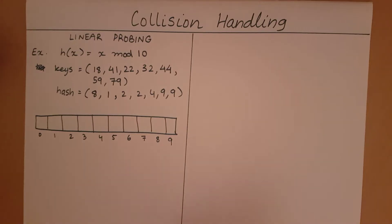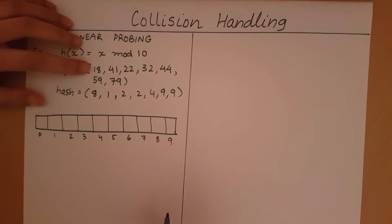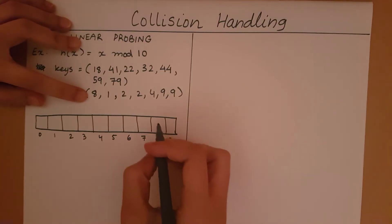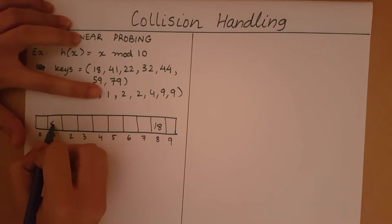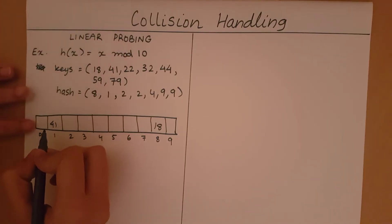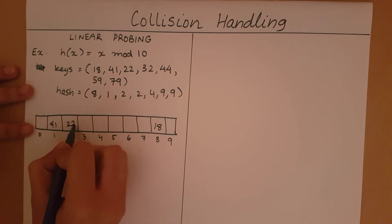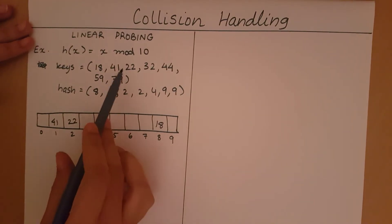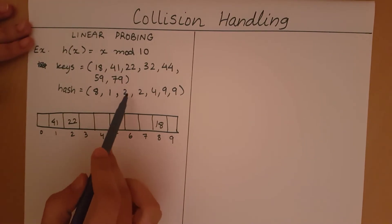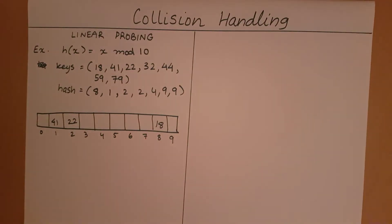Where do I place these keys? I place each key at the index equal to its hash value. So 18 will be placed at index 8, 41 at index 1, and 22 at index 2. So far it has been fairly easy — we just place the key at the index of its hash value.